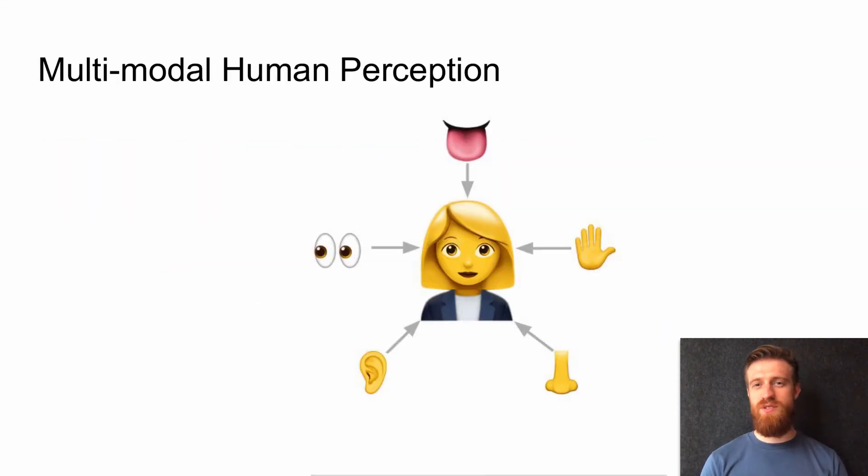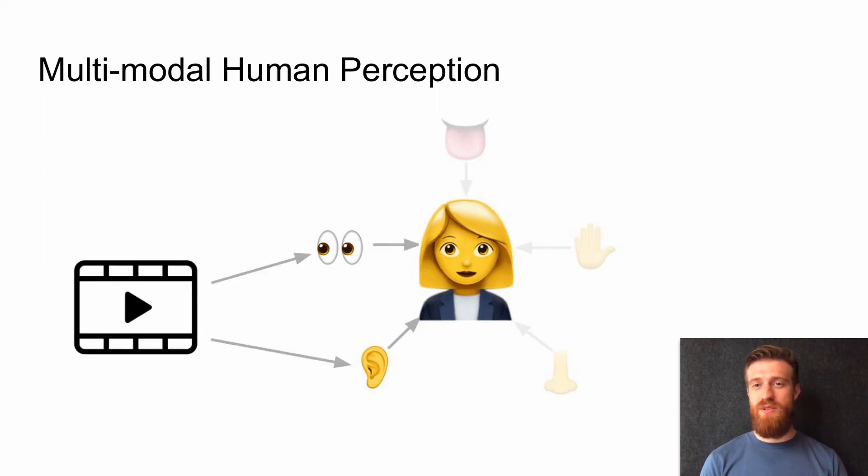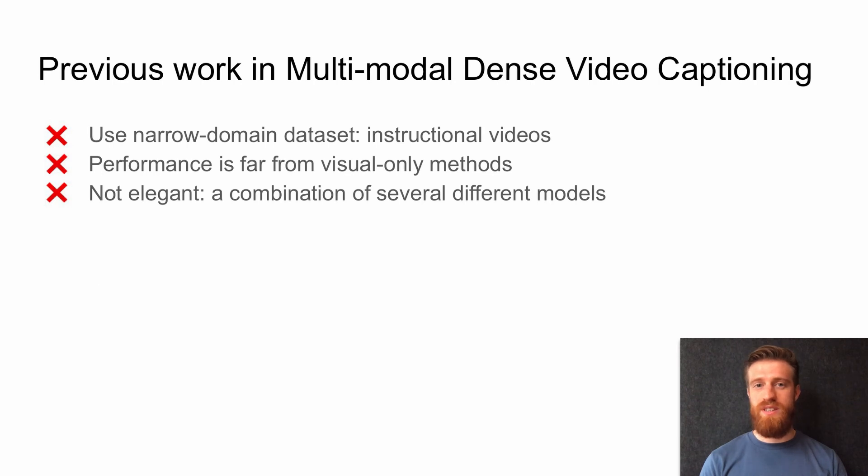A healthy person utilizes five senses to perceive information. Nowadays, a video provides information for two senses, and indeed we saw great advances in audio-visual training, including dense video captioning. Yet previous work on multimodal dense video captioning had several issues, namely the importance of audio is either shown on a narrow-domain dataset or the performance is still far from the visual-only models. Also, other models are using a combination of several different models, which makes the solution not elegant.